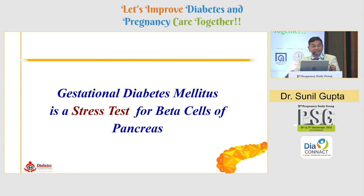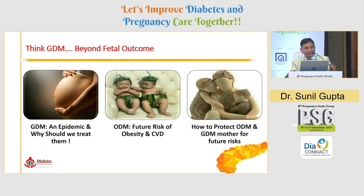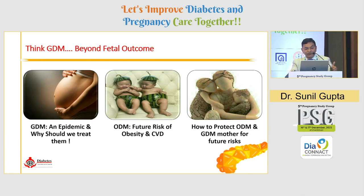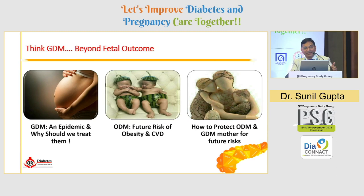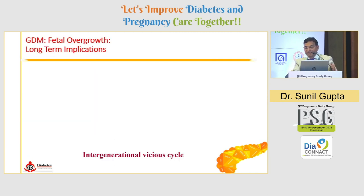GDM is a stress test for beta cells, and those beta cells that fail to respond become glucose intolerant. There is an epidemic of obesity, diabetes, and GDM. Every fifth woman in India, or every fourth woman in South East Asia, may have some form of hyperglycemia in pregnancy. Almost 80% will be gestational diabetes, around 9% will be pre-existing type 1 or type 2 diabetes, and around 10 to 11% are cases of DIP or overt diabetes never tested before. Children of diabetic mothers are likely to become obese and diabetic in the future.